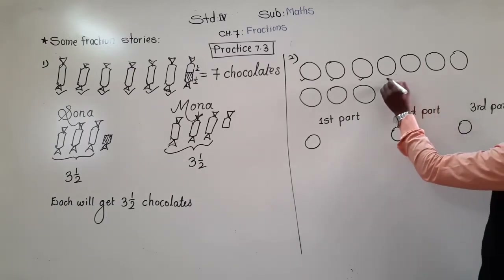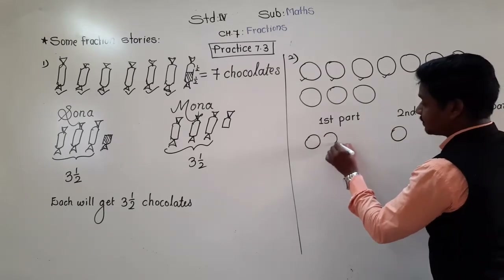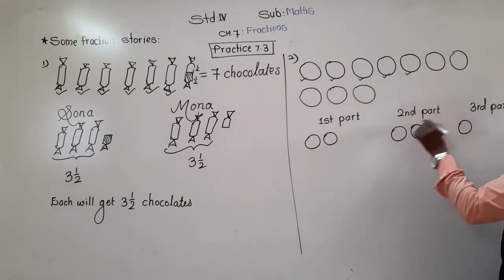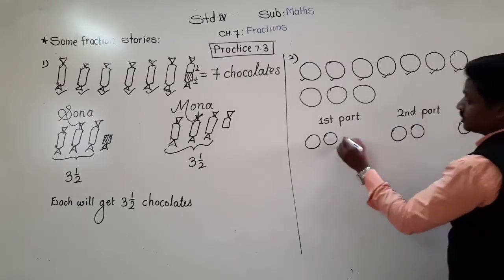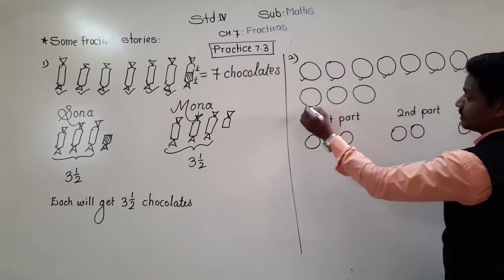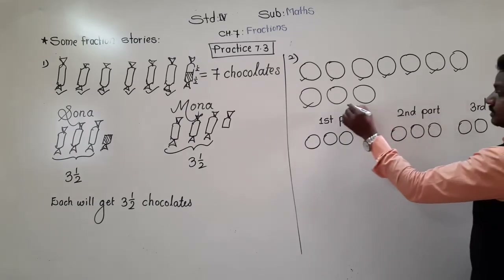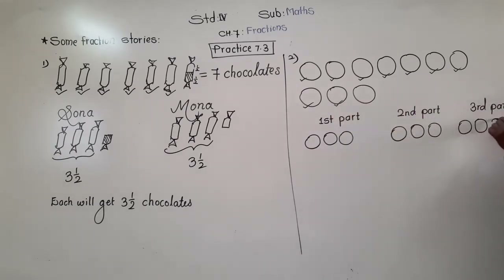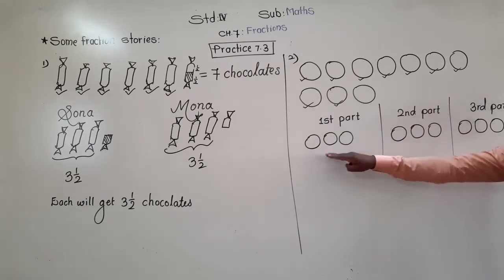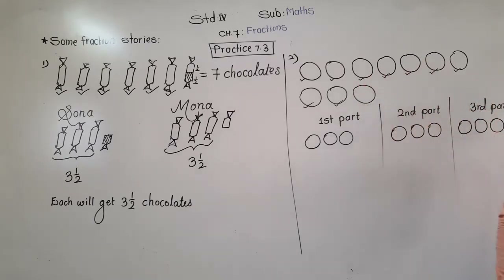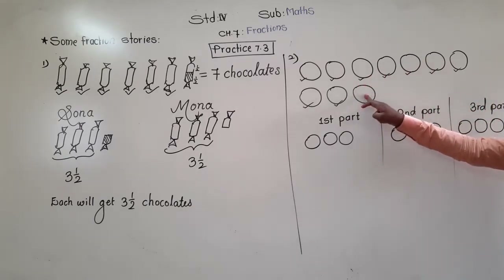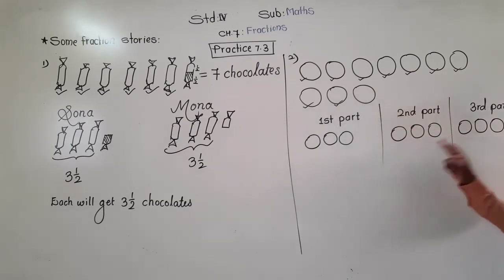Then the next round: 4th chapati in the 1st part, 5th in the 2nd part, 6th in the 3rd part. There are 4 more, so we give 1 each: 7th in the 1st part, 8th in the 2nd part, 9th in the 3rd part. Now in each part there are 3 chapatis — 9 chapatis are finished, only 1 remains.